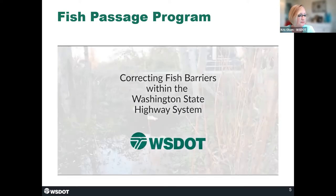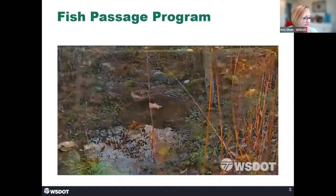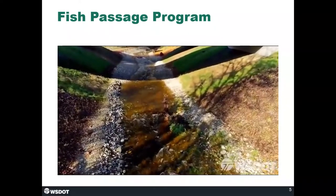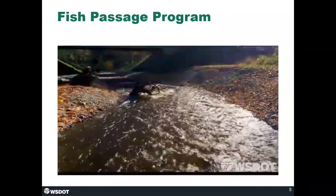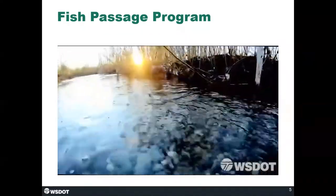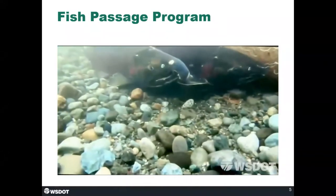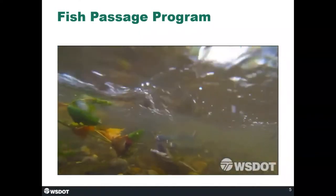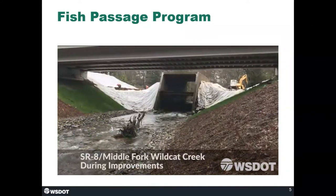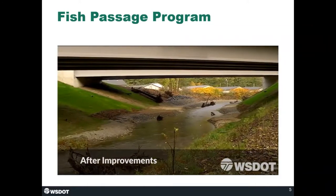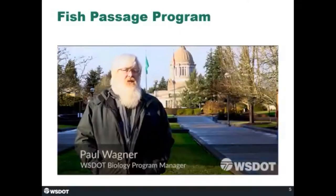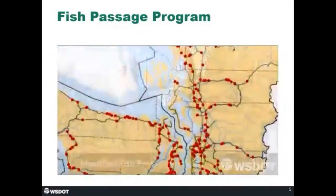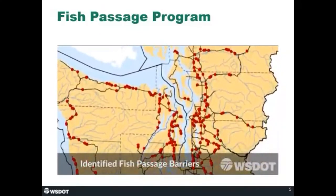Fish streams that have become blocked when they intersect a state highway affect migrating salmon's ability to access the full extent of some waterways. Correcting these barriers is an important part of the state's effort to protect and restore salmon runs and meet legal requirements from the federal government. Washington State has thousands of miles of streams that are home to salmon and other fish species, and there are many crossings of those streams by roads and highways that are often barriers to fish passage.